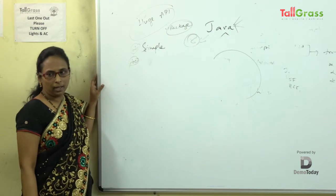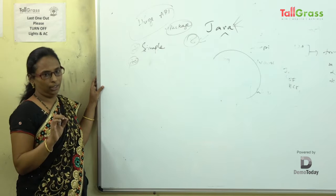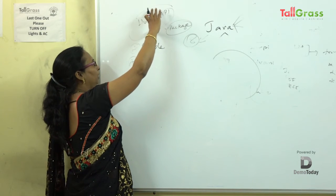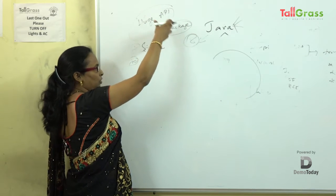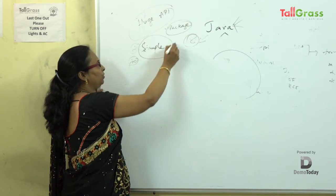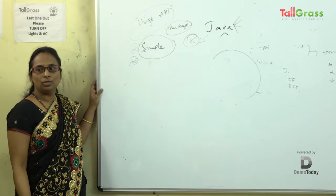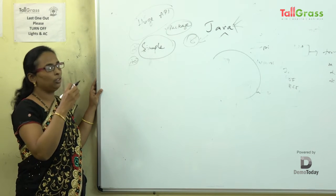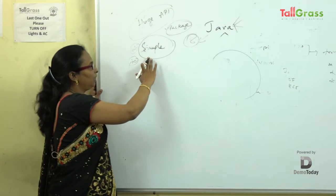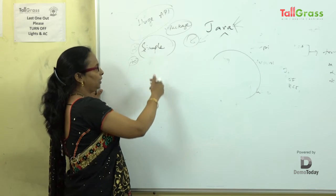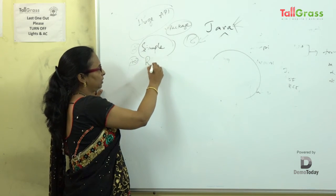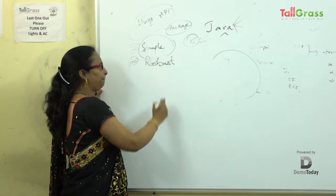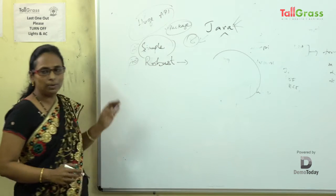These packages are predefined and maintained in the JVM — the software — and that makes your life simpler. We use lots of predefined functionalities in our applications. So we say Java is simple. Moving to the next feature: Java is robust. The literal meaning of robust is strong.